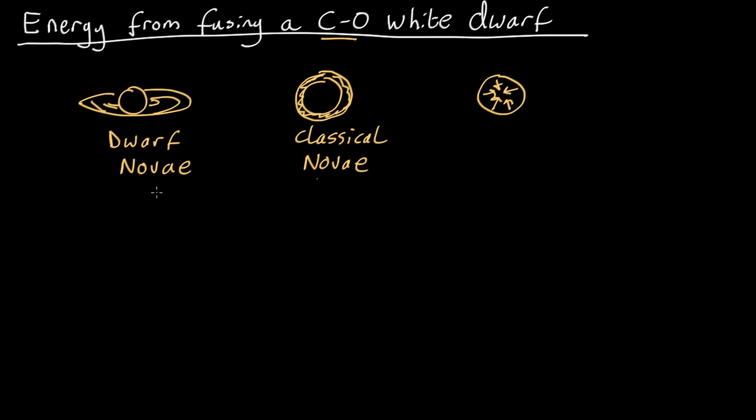The way we can work it out is look at the mass of carbon, oxygen, which is what you're starting off with, and iron. Now for carbon, the mass is typically 12.0107 atomic mass units. An atomic mass unit is 1.67 by 10 to the minus 27 kilograms.